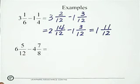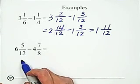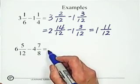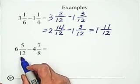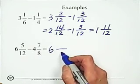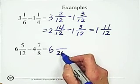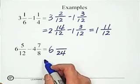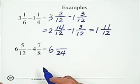The second example, 6 and 5 over 12, minus 4 and 7 over 8. The common denominator with 12 and 8 is 24. So if you still have problems with find the least common denominator, just go back to the review.